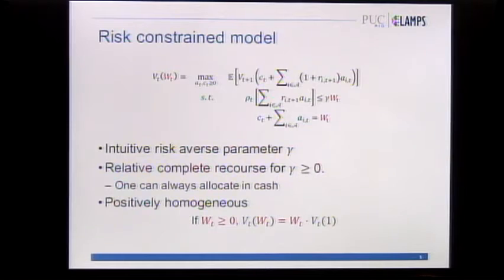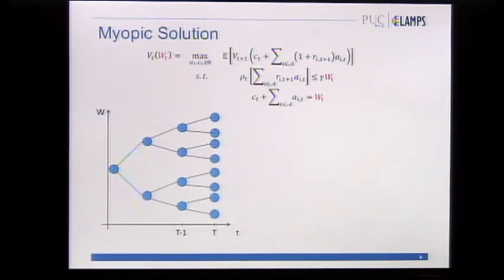This problem has some properties. First of all, we have an intuitive risk-averse parameter. Second, this problem has relative complete recourse if this parameter gamma is positive. This is actually good for us because for the SDDP algorithm we don't have to worry about feasibility cuts—it's always feasible. The last one is this problem has all of the right-hand side scalable by w, which means this can be positively homogeneous.